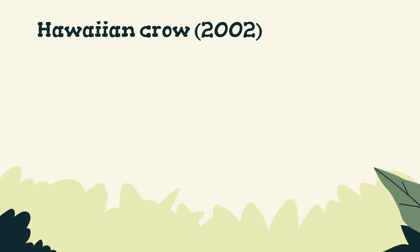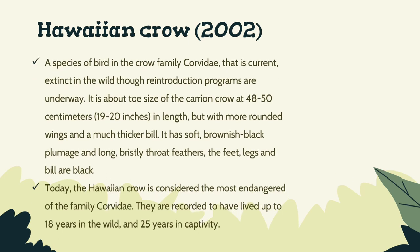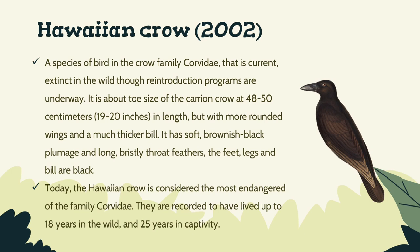Hawaiian Crow, in 2002. A species of bird in the crow family, Corvidae, that is currently extinct in the wild, though reintroduction programs are underway. It is about the size of the carrion crow at 48–50 cm in length, but with more rounded wings and a much thicker bill. It has soft, brownish-black plumage and long, bristly throat feathers. The feet, legs, and bill are black. Today, the Hawaiian crow is considered the most endangered of the family Corvidae.